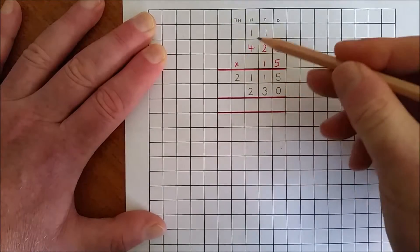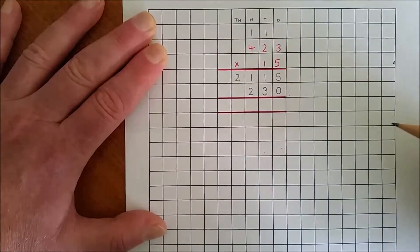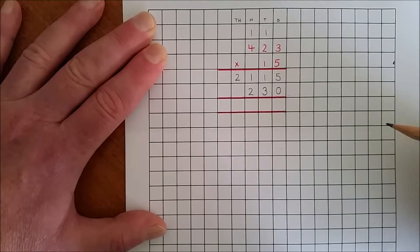Ten by four hundreds is forty hundreds. Rename forty hundreds as four thousand.